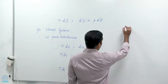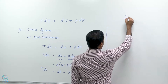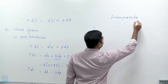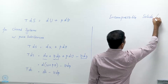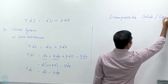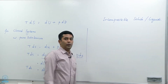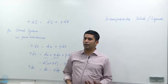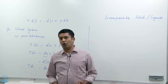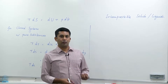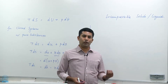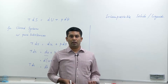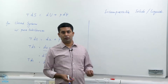In this video we are going to look at incompressible solids or liquids. By incompressible, we do not really mean incompressible. What we mean is that the change in specific volume is so small that it can be neglected, and practically we can assume that the specific volume of these solids and liquids is independent of pressure. They may depend on temperature of course, but they are independent of pressure.